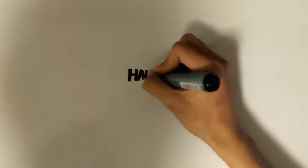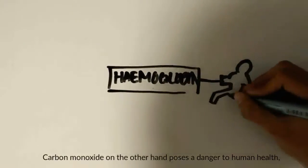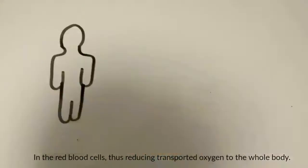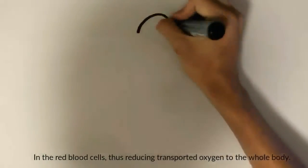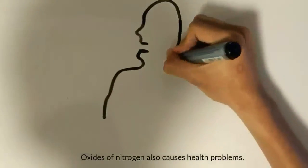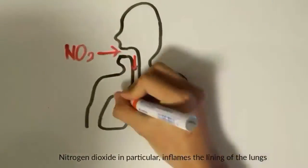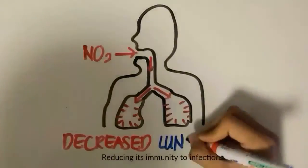Carbon monoxide, on the other hand, poses danger to human health because it competes with oxygen to bind hemoglobin in the red blood cells, thus reducing transported oxygen to the whole body. Also, oxides of nitrogen cause health problems. Nitrogen dioxide in particular inflames the lining of the lungs, thus reducing its immunity to infections.